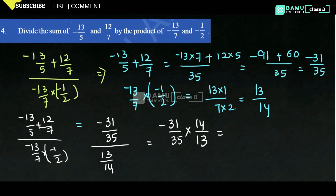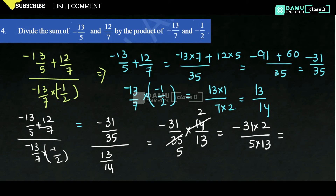Minus into minus gives plus. We can simplify: 14 and 35 share a factor of 7, giving 2 and 5. So we get 31 into 2 by 5 into 13, that is 62 by 65. That is our answer.